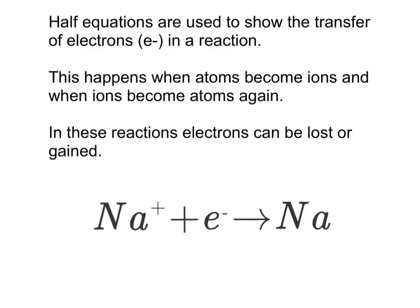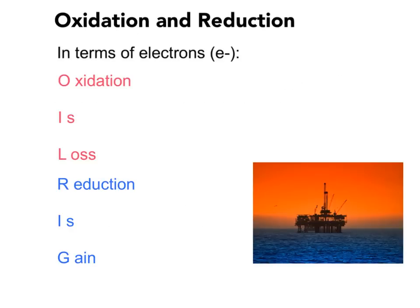Hopefully you're already familiar with what a half equation looks like. When we think about the transfer of electrons — the loss and gain of electrons in a half equation — we can describe this as oxidation and reduction. We can use the term OIL RIG to help us think about this. OIL RIG tells us that oxidation is the loss of electrons and reduction is the gain of electrons.